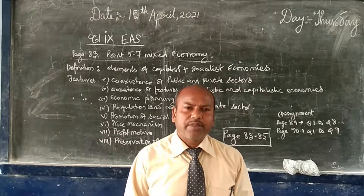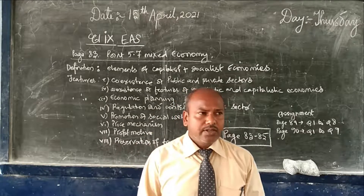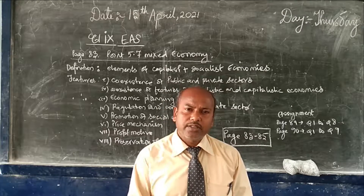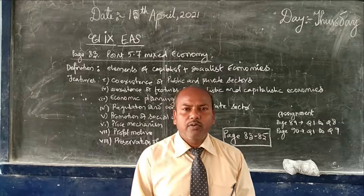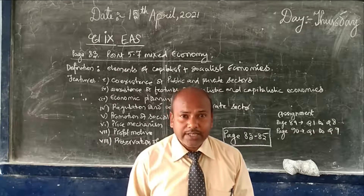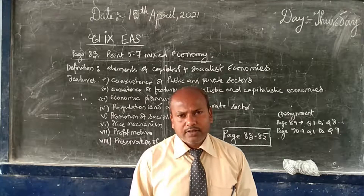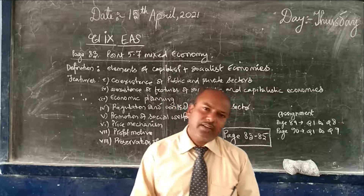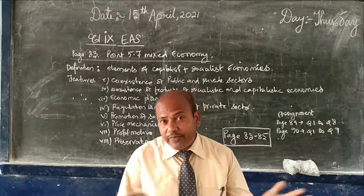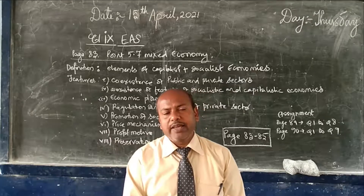This lesson started with the capitalistic economy, then the socialistic economy, and now we come to the mixed economy. In the socialistic economy, resources are owned and managed by public authorities, whereas in the capitalistic economy, resources are owned and managed by private individuals. In the capitalistic economy there is no interference by the government, while in the socialistic economy everything is managed by the government, leaving little scope for private individuals.